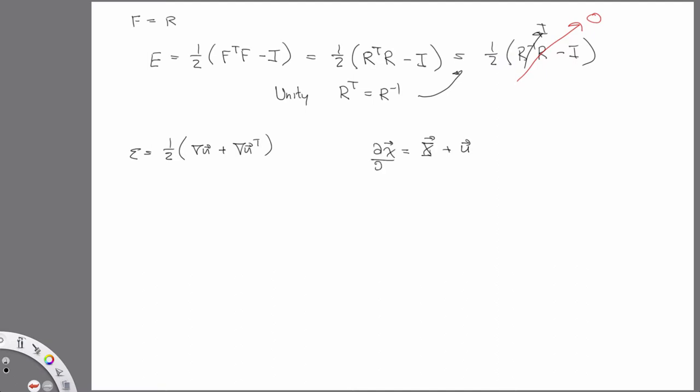And then I said, if you partial differentiate this guy with respect to X, partial x partial X, then this is our definition of the deformation gradient. This is I. This is grad u.